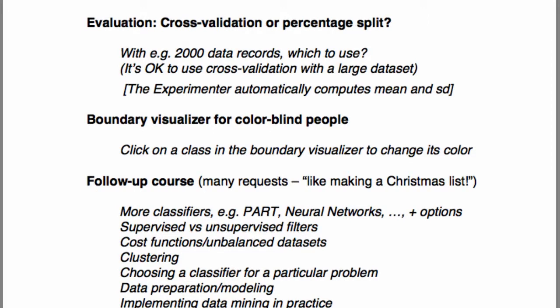What about the Boundary Visualizer for colorblind people? I never thought of this, but it was an interesting question. Actually, it's very simple — you can click on a class in the Boundary Visualizer and change the colors it uses. Just click on the name of the class and you get to select all the colors used for that class. I hope that would be sufficient to allow colorblind people to make sense of the Boundary Visualizer output.